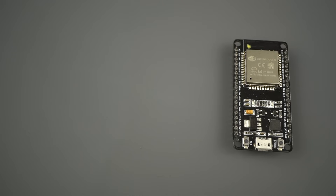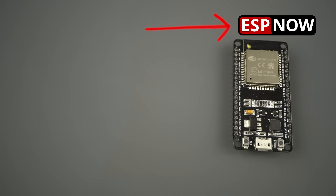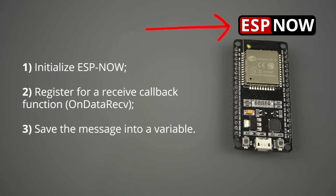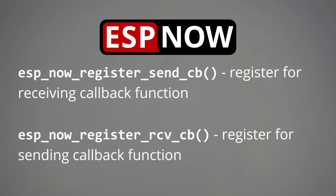To receive data via ESPNOW, you need to first initialize ESPNOW, then register a receive callback function — a function that will be executed when a message is received. Inside that callback function, save the message into a variable to execute any task with that information. ESPNOW works with callback functions that are called when a device receives a message or when a message is sent, so whether you want to send, receive, or both, you just need to use those callback functions.